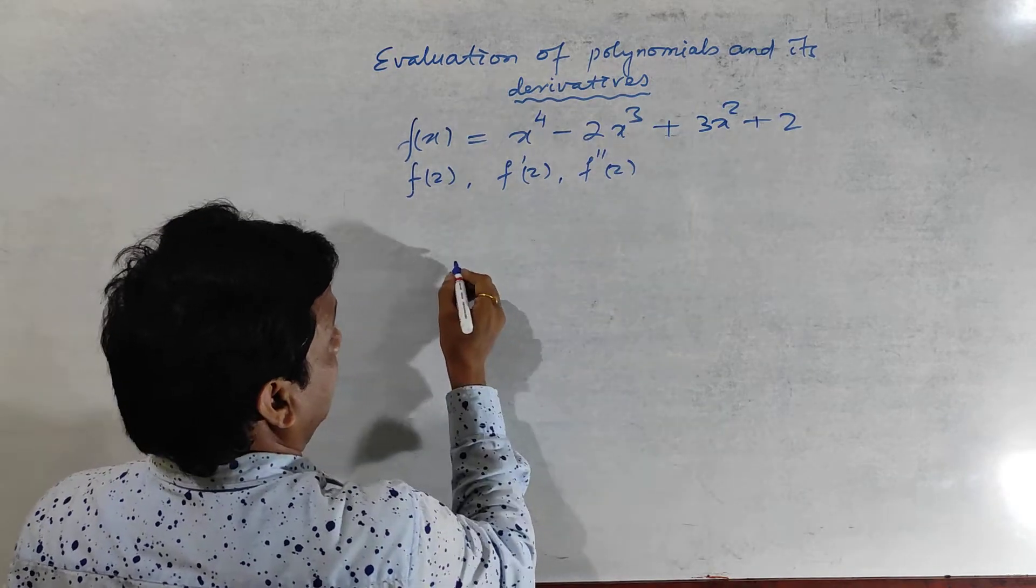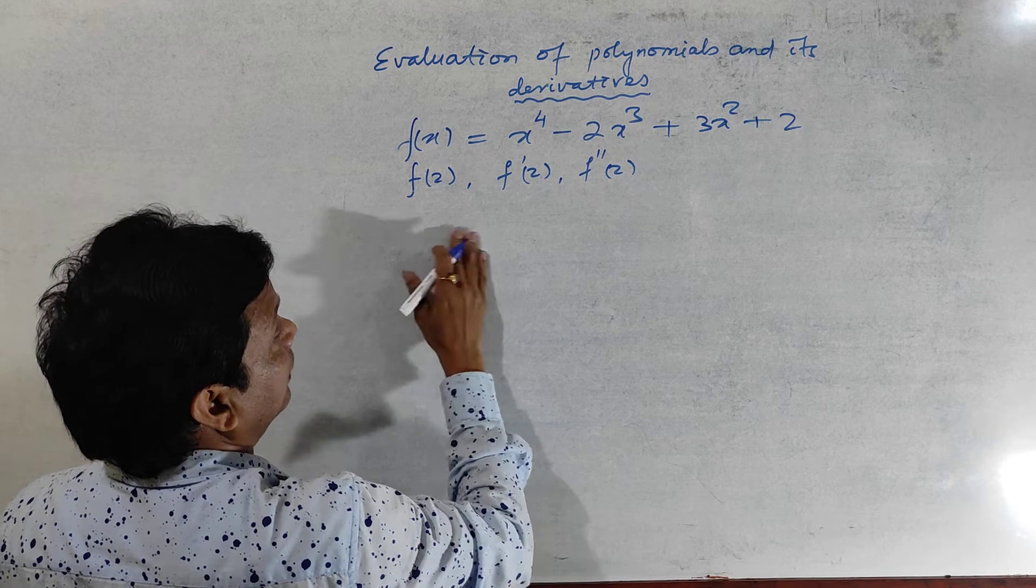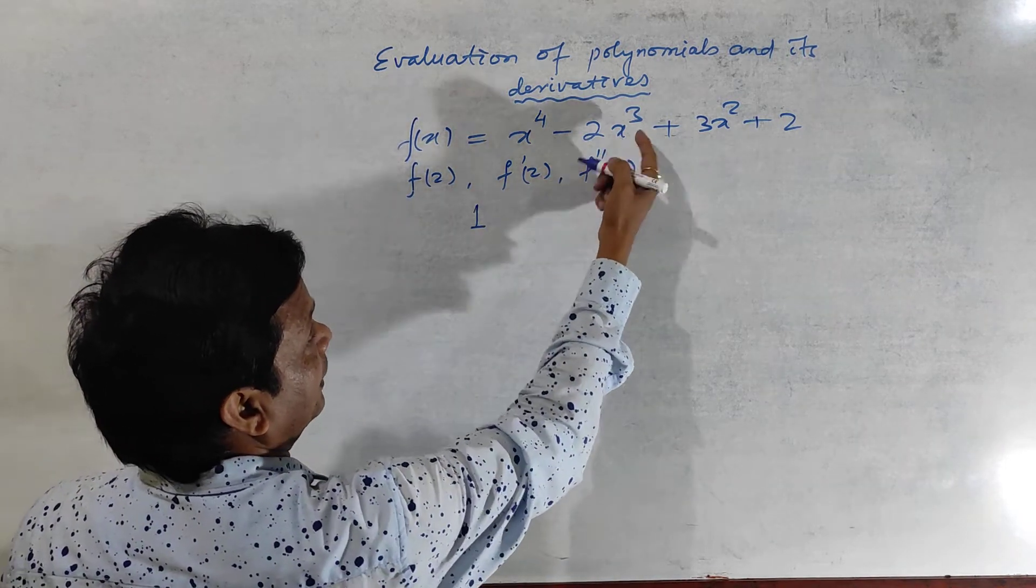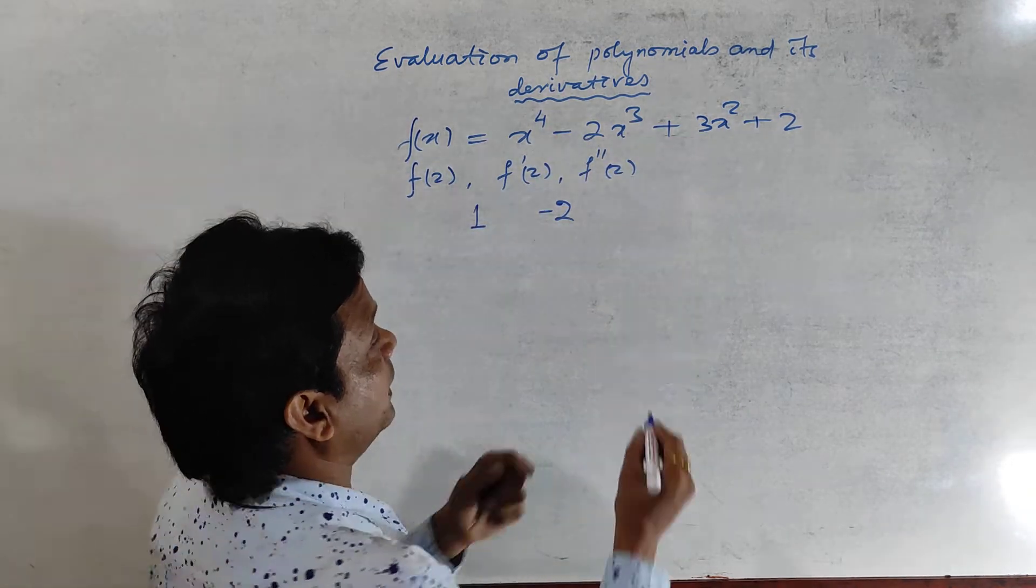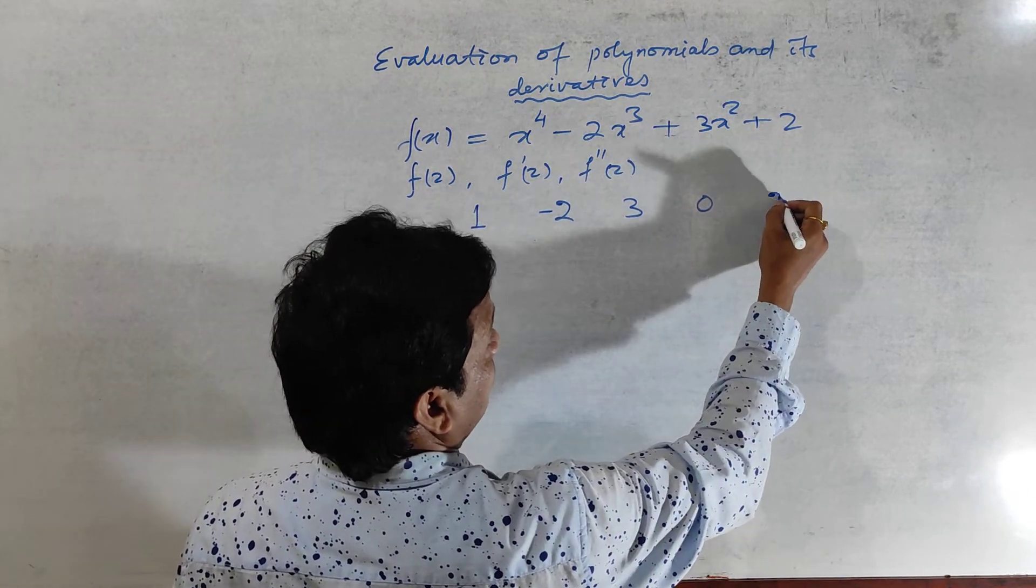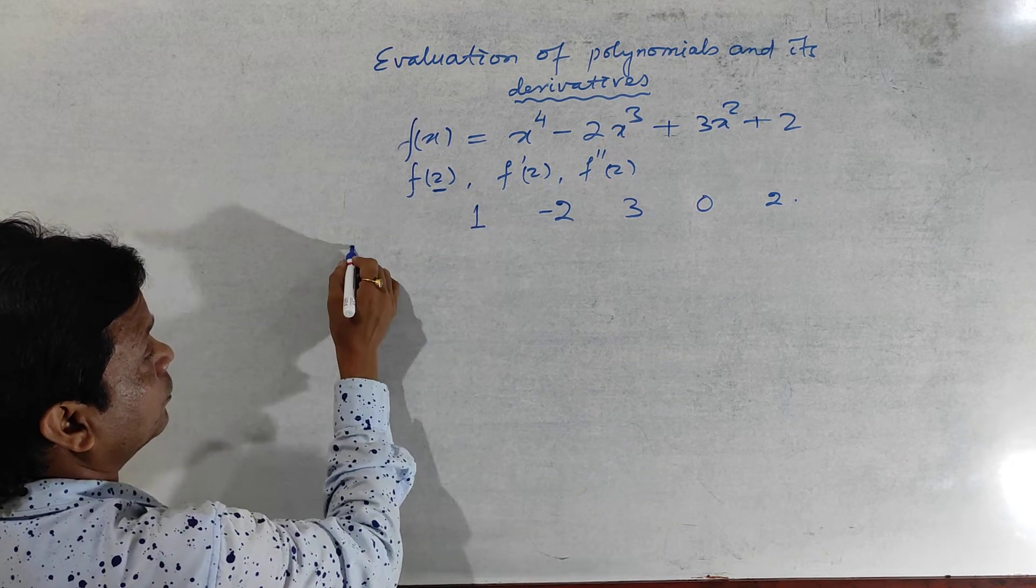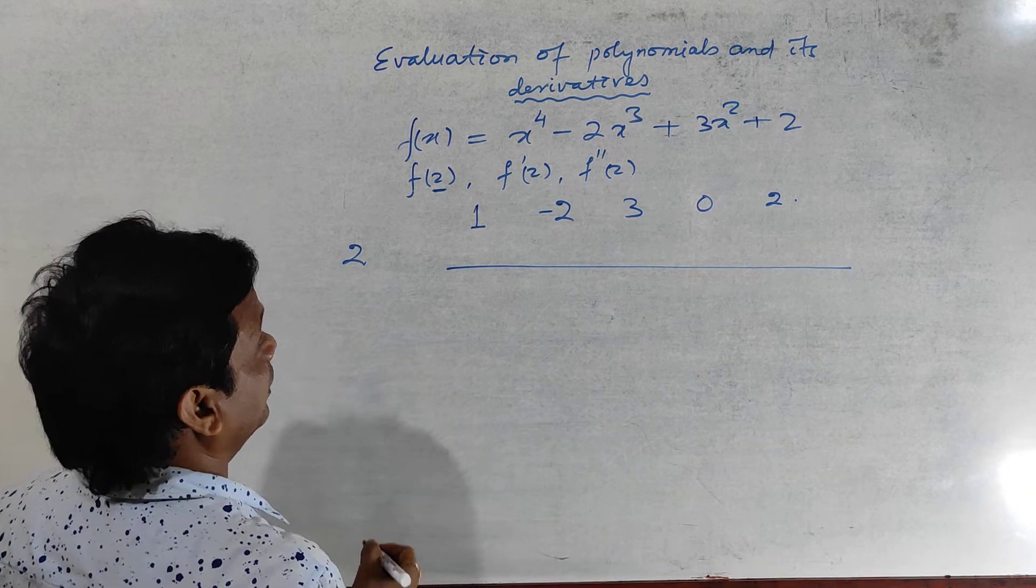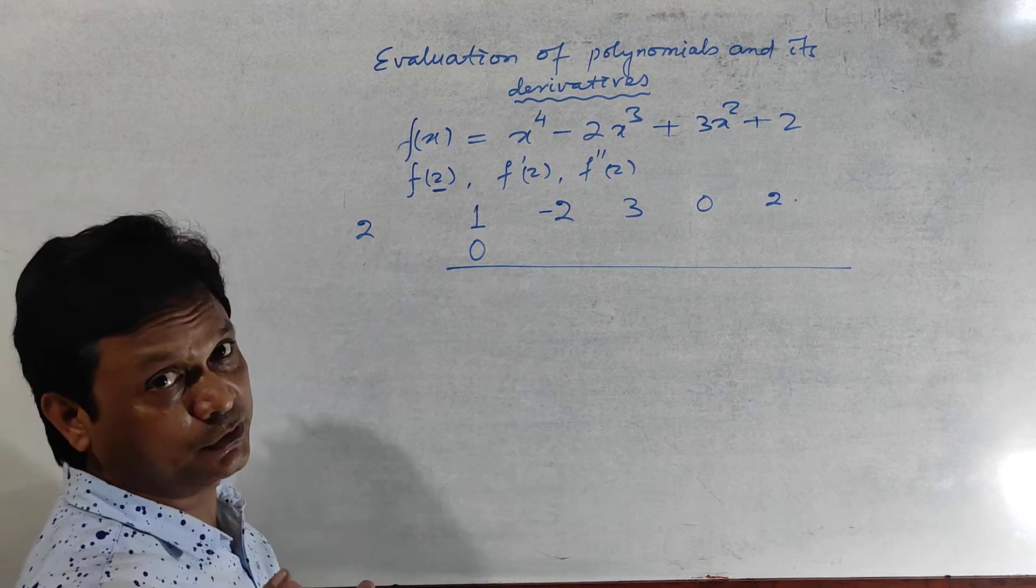I am writing the coefficients of the polynomial in the decreasing order. The coefficient of x to the power 4 is 1, I am writing here 1. Then the coefficient of x cube is minus 2, then the coefficient of x square is 3 and the coefficient of x is 0, there is no x, and then 2. And you have to find out f of 2, so write 2 here and draw a line here. And now first of all, write 0 here, always write 0 in the first column.